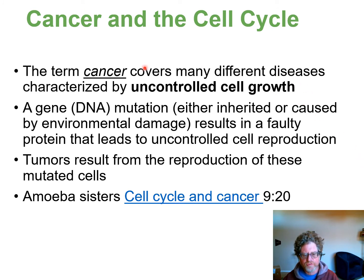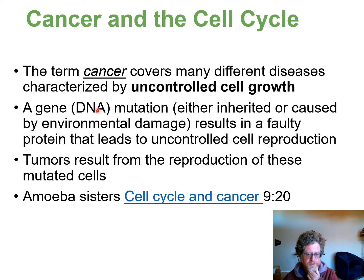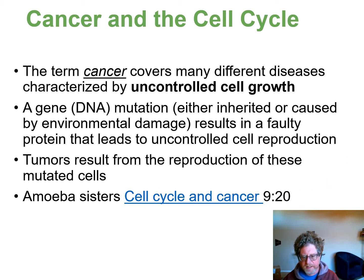Cancer is uncontrolled cell growth. One reason to understand cell division is to understand how cancer happens. Cancer occurs either from a DNA mutation we're born with or from environmentally-caused DNA damage, such as excessive sun exposure or smoking. When there is DNA damage, the protein built from that DNA is faulty, and a tumor results from this faulty protein. You can also watch the Amoeba Sisters to learn about the cell cycle and cancer.